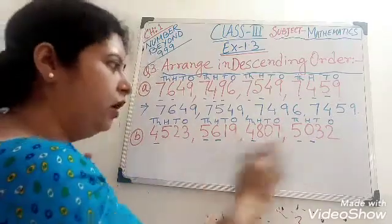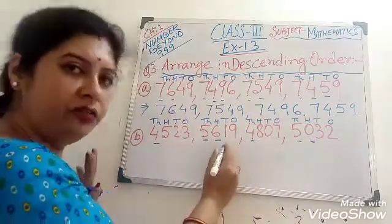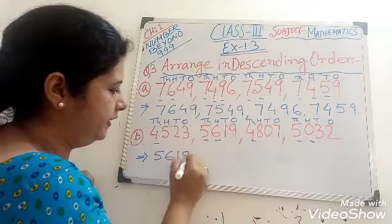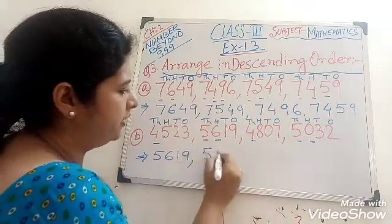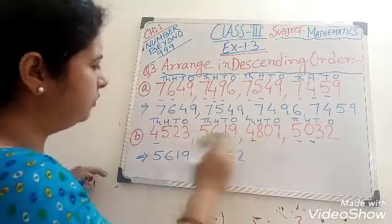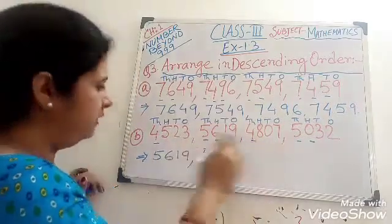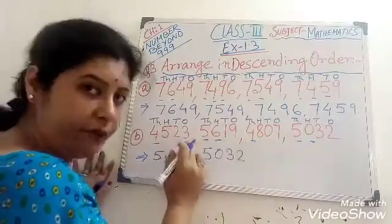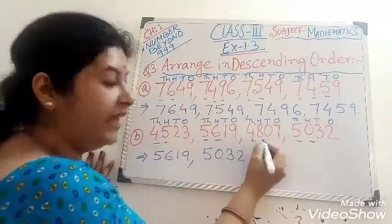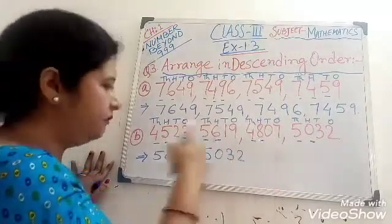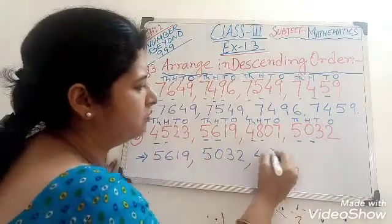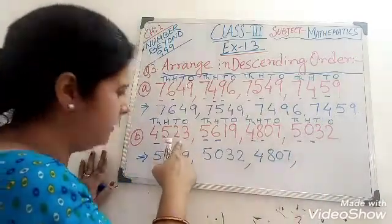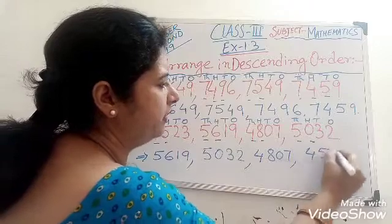This number is bigger than all numbers. So we write down first: 5,619. Then 5,032. Now come to the other two numbers. These two numbers in the thousand place are both the same: 4,000. But in the hundred place, it is 500 and it is 800. So this number is bigger than this number.